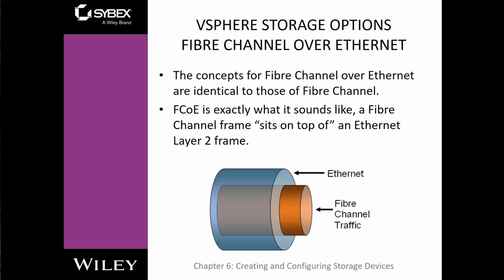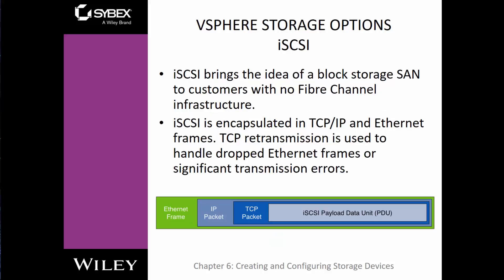Fiber Channel over Ethernet is an Ethernet connection or Ethernet frame that packages Fiber Channel traffic and sends it over an Ethernet frame. iSCSI is again an Ethernet frame — it contains an IP packet, a TCP packet, and then the actual iSCSI payload, which is a SCSI command sent through an IP packet using the same infrastructure that a data network would use.